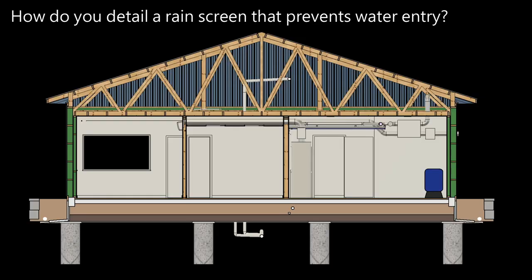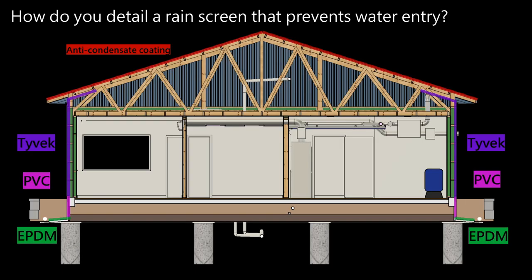How do you detail a rain screen that prevents water entry? Looking at the same section view: the roof steel is on top, then there is Tyvek Commercial D behind the wall steel. There's PVC insulation protection on the rigid insulation below ground, and then that leads into an EPDM membrane.